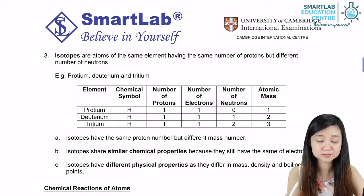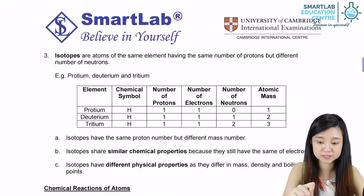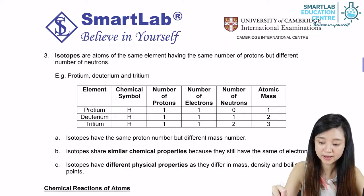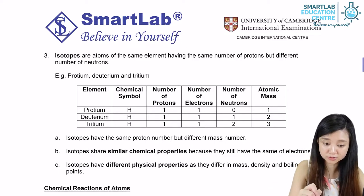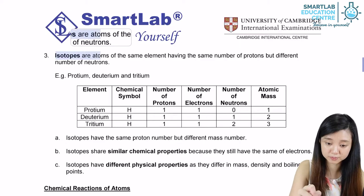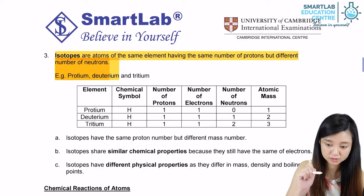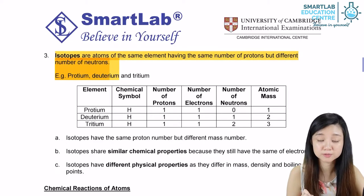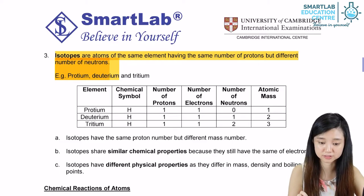There's another group of atoms called isotopes. They are atoms of the same element having the same number of protons but a different number of neutrons. Since they have the same number of protons, we therefore say that they also have the same number of electrons.